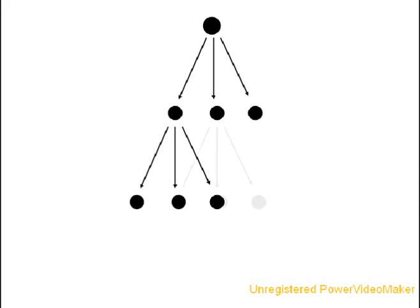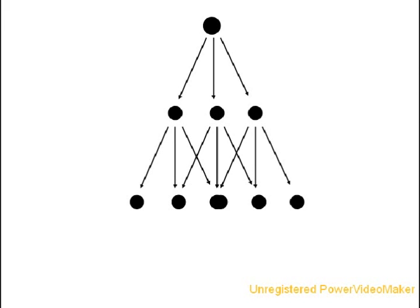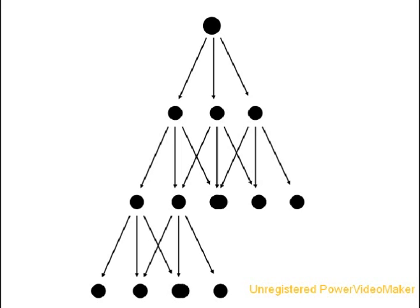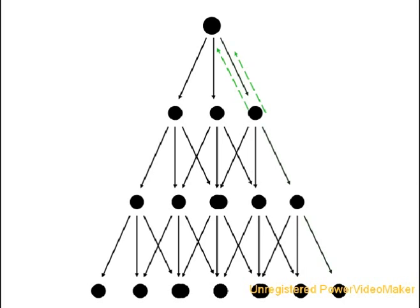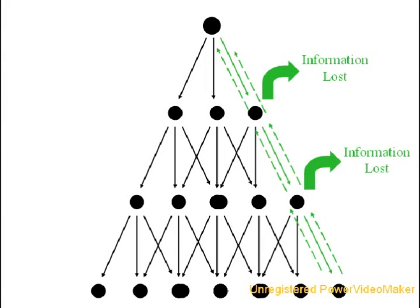In a hierarchy, layers of command and control form from the top down. At the top, nodes issuing commands are in ultimate control. Near the bottom, nodes carry out orders sent from above and then send information back up the layers of hierarchy. During this process, however, some information can get lost — imagine a game of telephone you might have played as a kid. As chains of hierarchy lengthen and more layers are introduced, more information is lost and controller nodes have more difficulty issuing commands and making decisions.